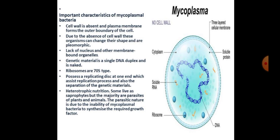Mycoplasma gallisepticum is one important example and is the smallest prokaryote. They are either saprophytic or cause diseases like pleuropneumonia in domestic animals, and potato witches' broom, aster yellows, and little leaf of brinjal — meaning they are pathogenic.